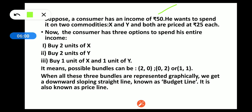The consumer has three options to spend his entire income. First, buy two units of X — if the price of X is 25 rupees, then 2X costs 50 rupees. Second, buy two units of Y at the price of Y. Third, buy one unit of X and one unit of Y. So the possible bundles can be (2, 0), (0, 2), and (1, 1).